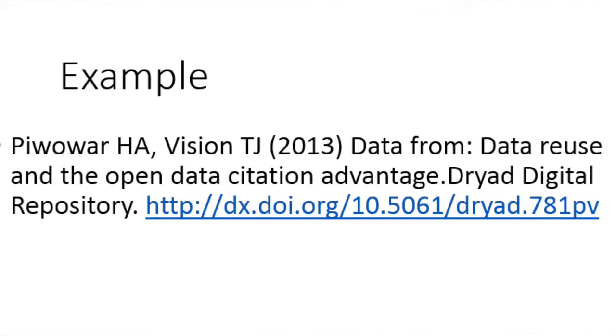I'm also going to show you another example of what that actually looks like in practice. This example comes from a really nice article — the data corresponds to a paper about how when you share your data, the citation counts on your articles go up. You can see in this example it has those five key elements, and even in the title it says it's data from that particular paper.